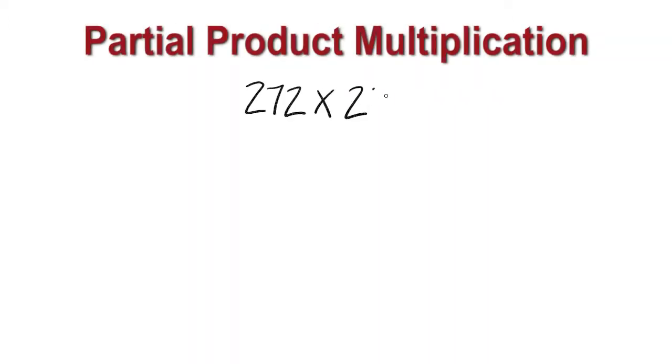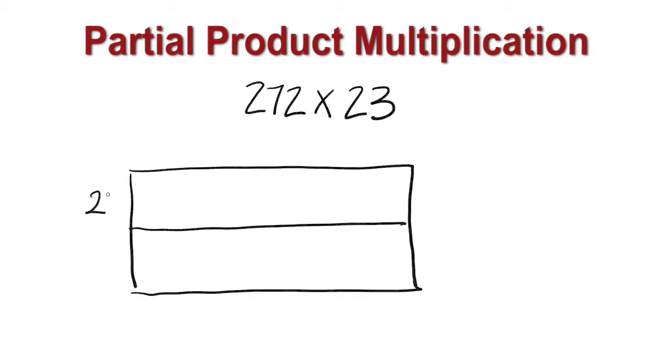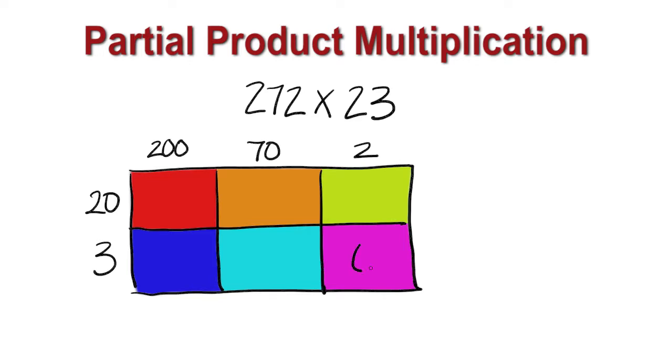Now let's compare the algorithm method with a couple of partial product methods. If we take our same problem but use an open array, we write 23 as 20 and 3 on one side, and we break up 272 to 200 plus 70 plus 2. Now we find the partial products for each area. 3 times 2 equals 6, 3 times 70 is 210, and 3 times 200 is 600.